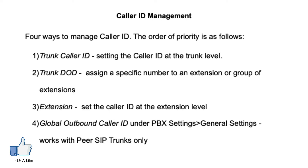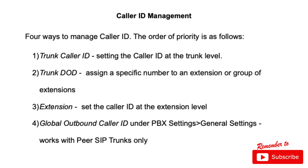There are four ways to manage the outbound caller ID on a Grandstream UCM and it follows a specific order of priority, with the first and highest being setting the outbound caller ID at the trunk level. Number two would be setting the trunk DOD — direct outward dial — where if you have multiple DIDs in your organization you can set a specific DID to an extension, a group of extensions, or all extensions to that specific DID.